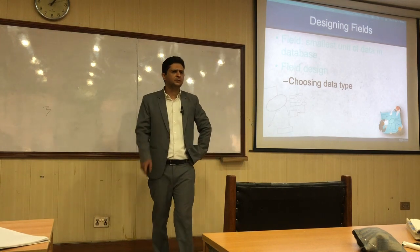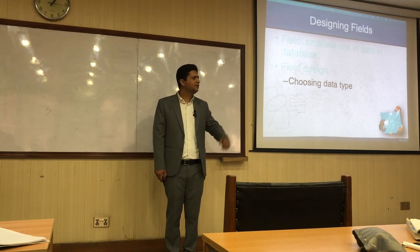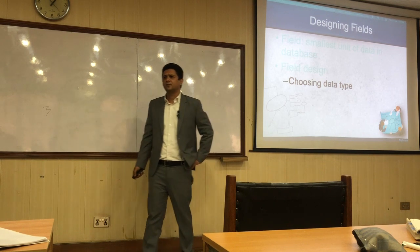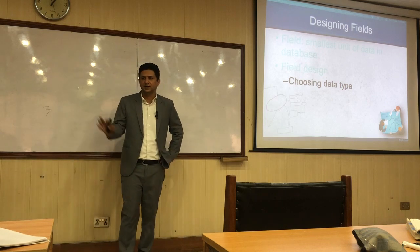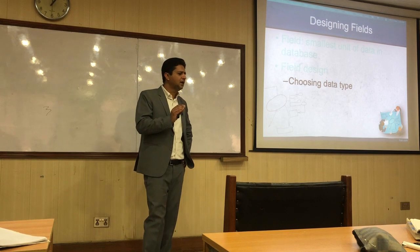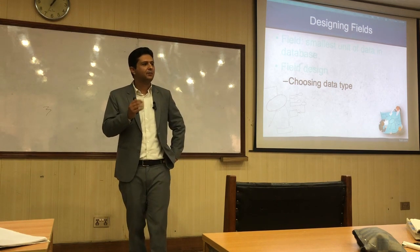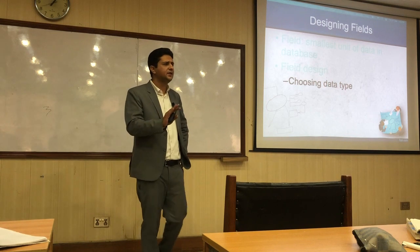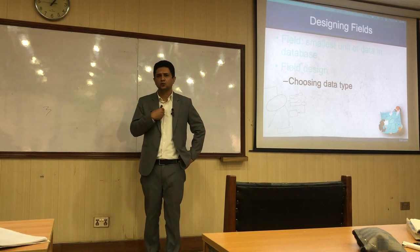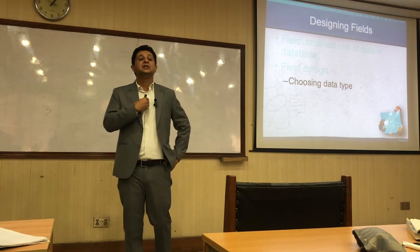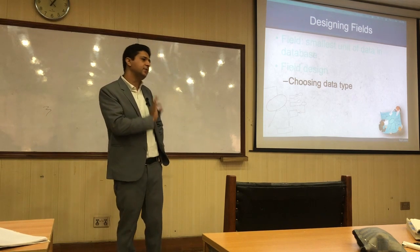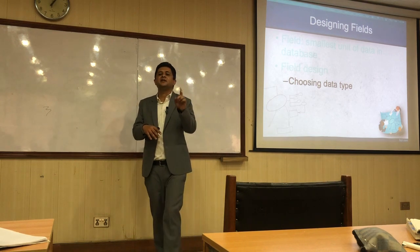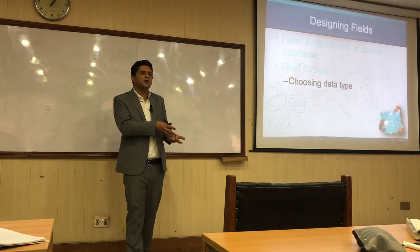While designing fields for any relation, we have to make decisions — for example, about the data type. Different data types are available in different database management systems such as Oracle, Microsoft SQL Server, MySQL, IBM DB2, Firebase, MariaDB, and MongoDB. We have to choose appropriate data types for the fields to be implemented because we can have more than one option — for example, to store a date, we can define it as a date type or as a string.